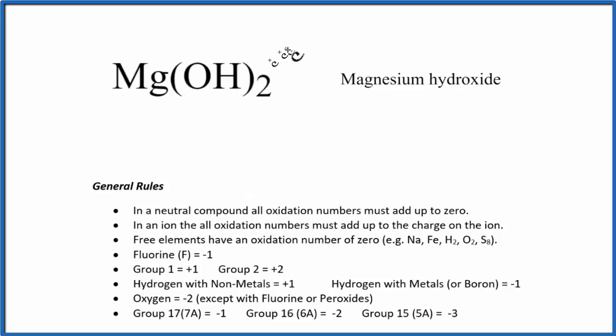First thing to note: magnesium hydroxide, this compound, doesn't have a plus or minus after it. That means it's a neutral compound, like an ion would have a charge. As a neutral compound, all the oxidation numbers add up to zero.